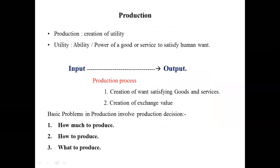Today I will cover the topic Theory of Production. In theory of production, production basically means creation of utility. Utility is the power or capability of any commodity to satisfy human wants. In production, we convert inputs to outputs. In this process, two things happen: first, the creation of want-satisfying goods or services, and second, the creation of exchange value, meaning we create output that can be exchanged for other things.